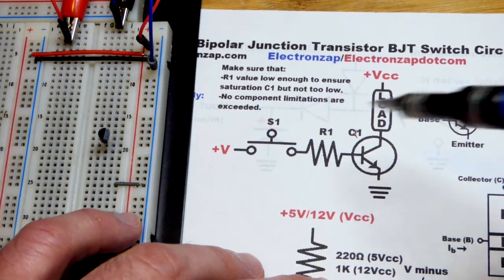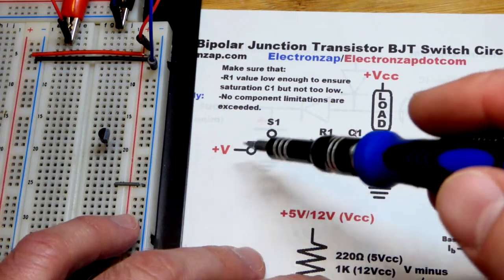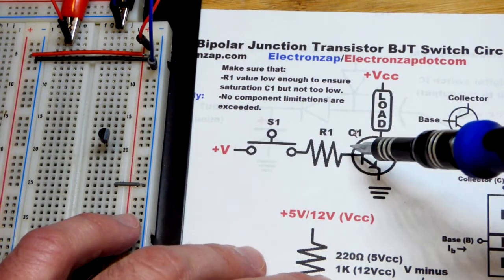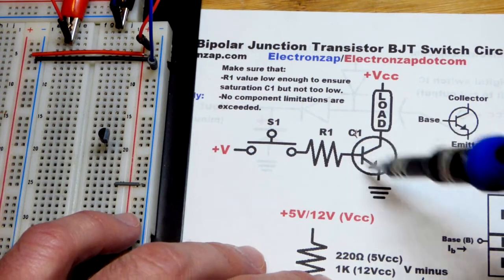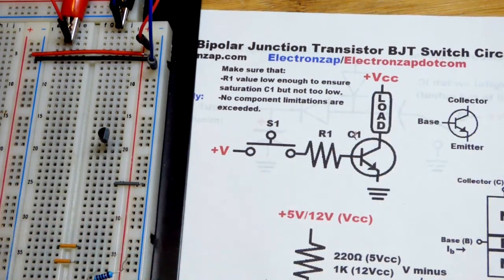When you hear low side switching, that's what it means. For high side switching with the transistor, this switch is more positive than the resistor and the diode. For that, you need a PNP bipolar junction transistor.